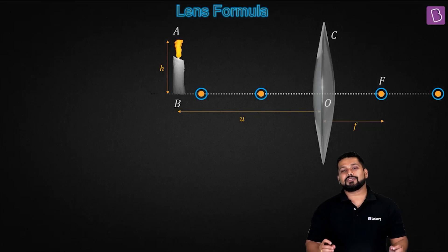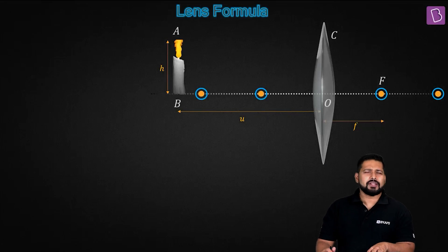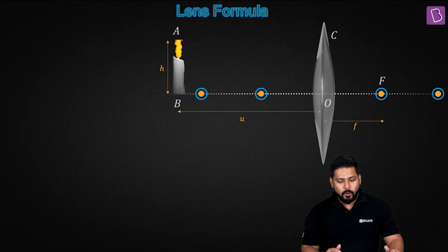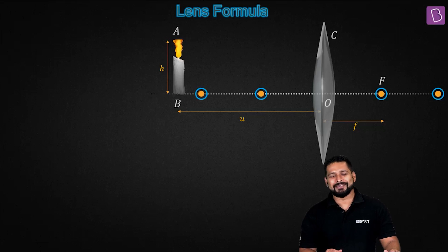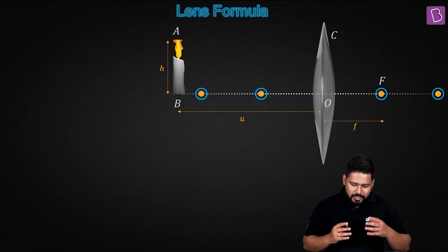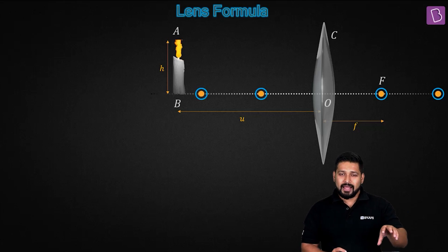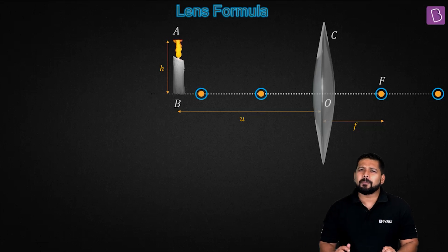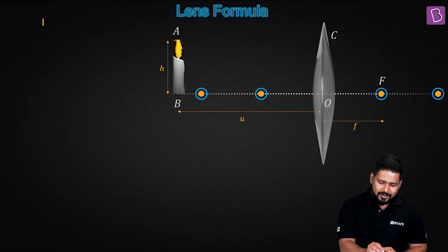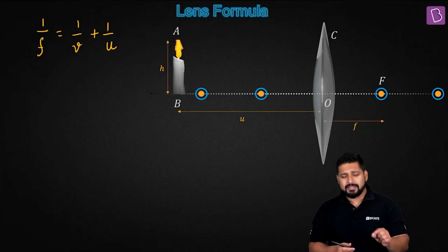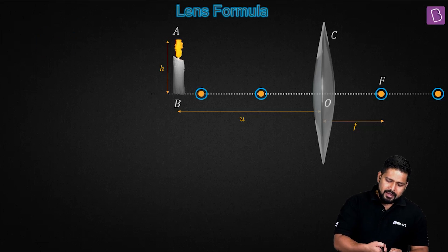We need to derive a formula called the lens formula or thin lens formula. This formula is simple, but the derivation is really important — board exams keep asking for it again and again. We need a relation between object distance, image distance, and focal length, just like we got for mirrors. The mirror formula was 1/f = 1/v + 1/u, and we call this the lens formula. Remember, we are deriving it only for thin lenses.